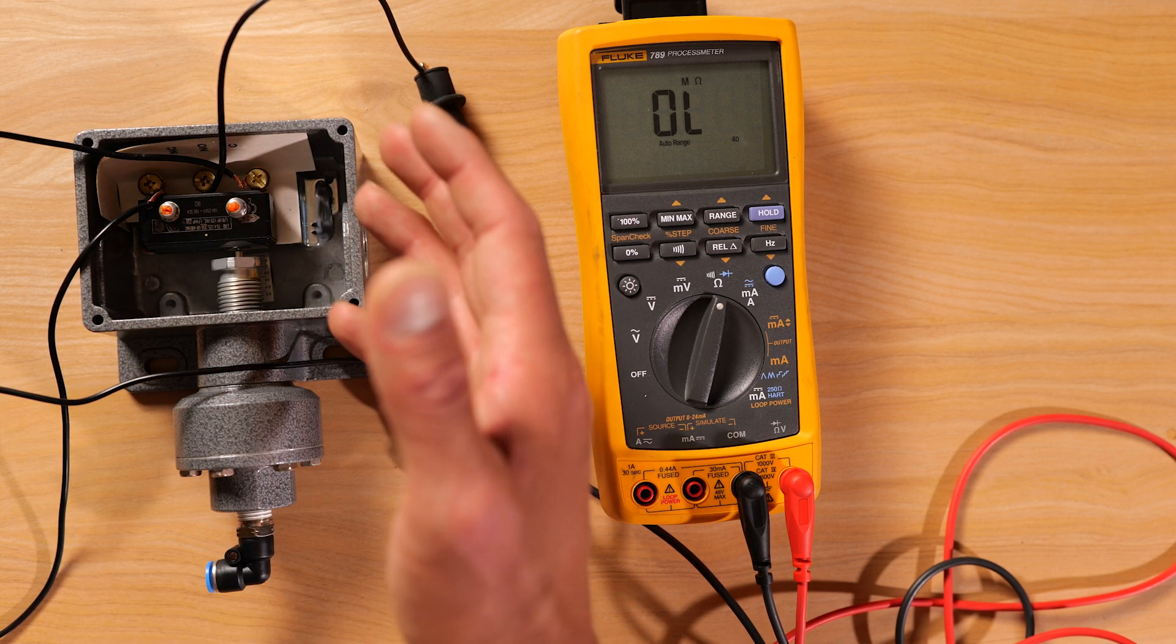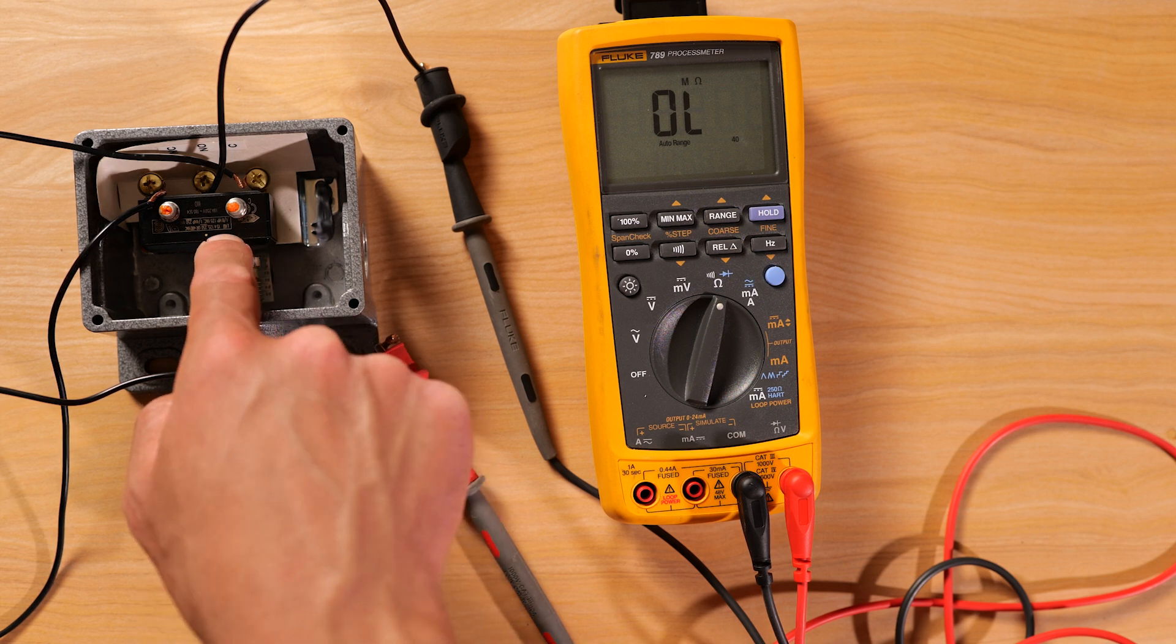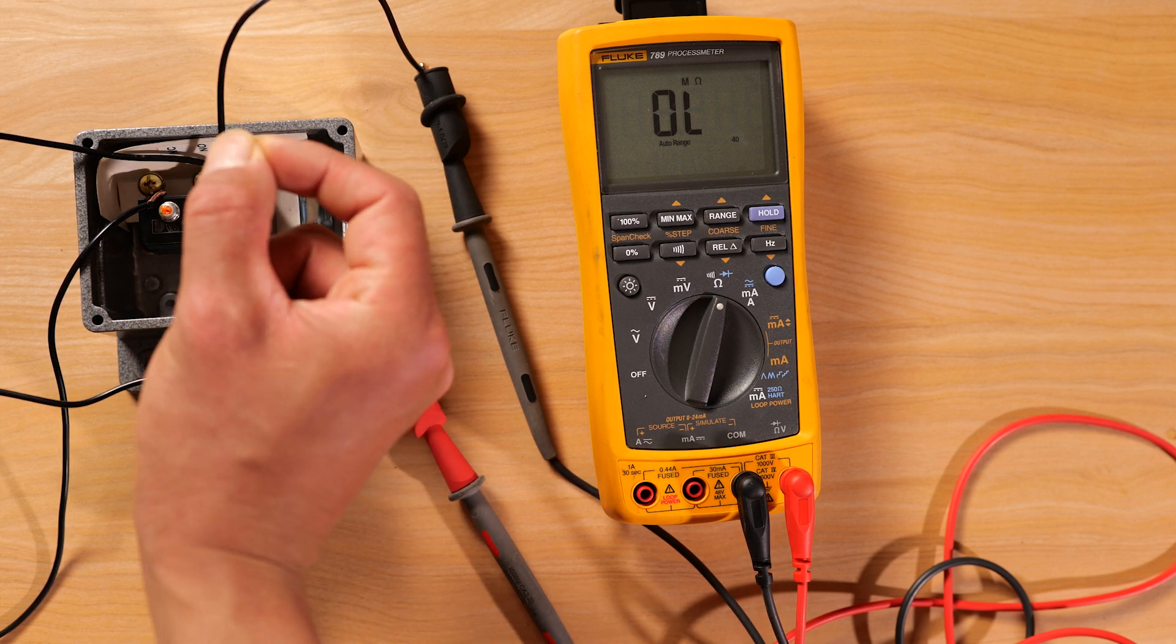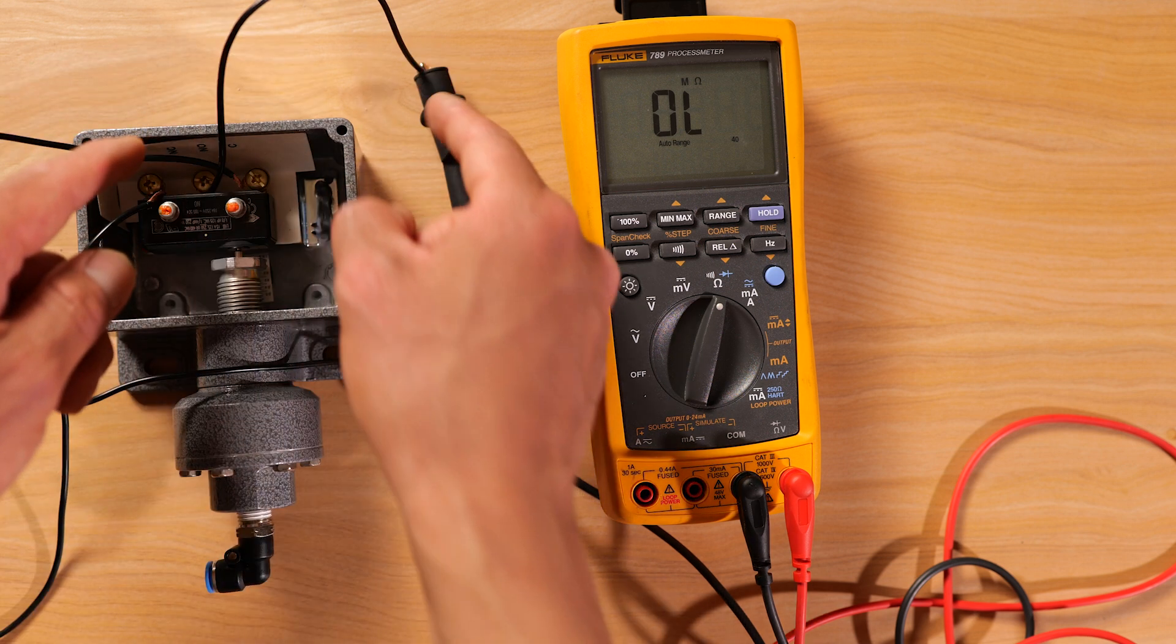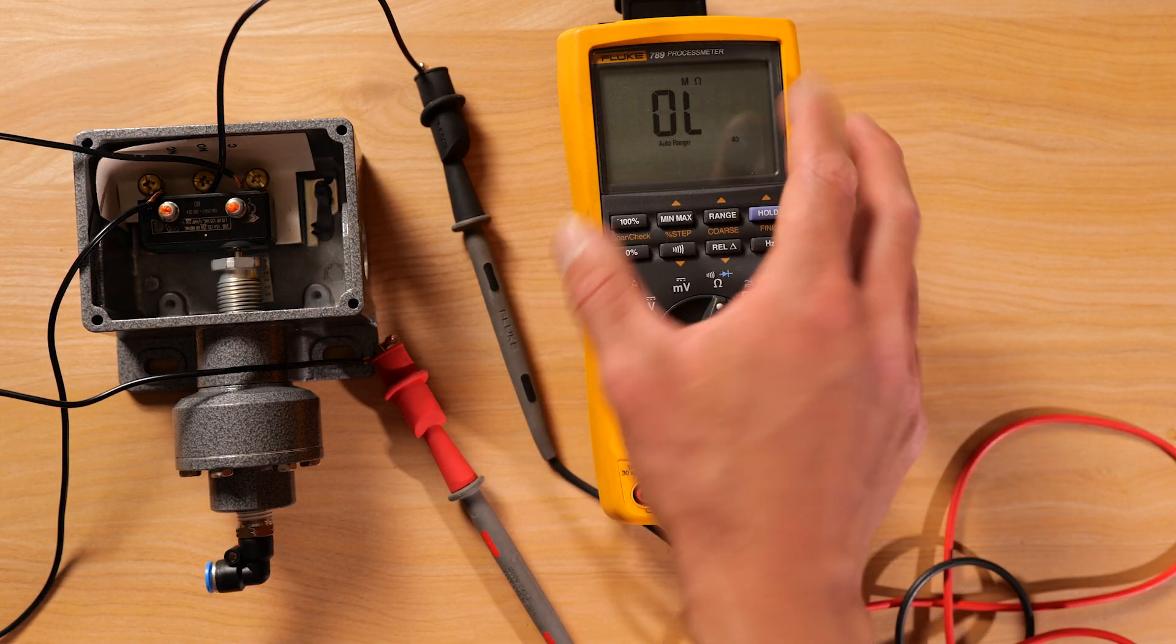This circuit right here is open, right? So not until you apply pressure, this micro switch will then close contact and then allow resistance or continuity to be able to flow through and show us an actual ohm reading, right?